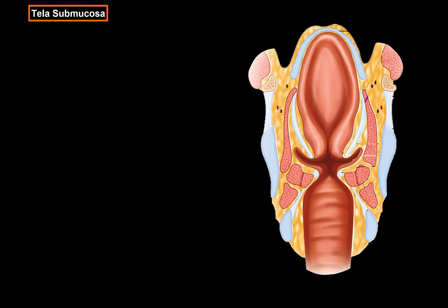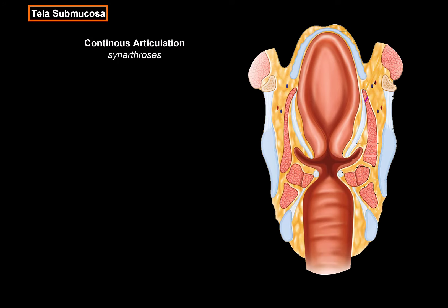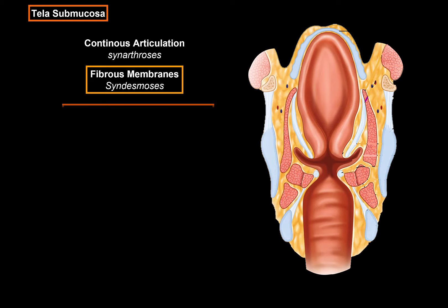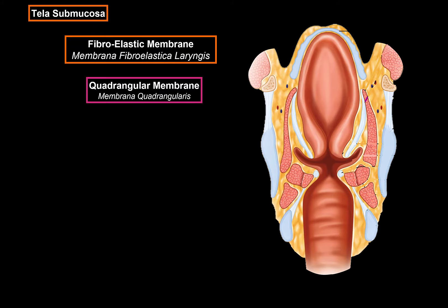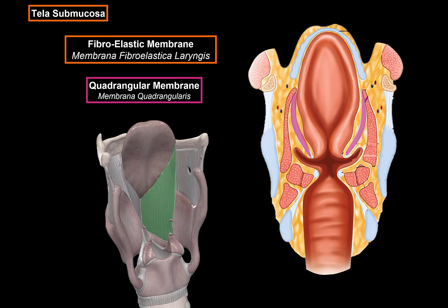Next we have the tela submucosa. Remember when we went through the connections of the larynx and talked about the continuous connections, specifically the fibrous membrane of the larynx — at some places the fibrous membranes form the so-called fibroelastic membrane, which are elastic membranes playing a key role in you being able to speak. There are two fibroelastic membranes in the larynx. The first one is the quadrangular membrane, which goes between the vestibular folds and the epiglottis.